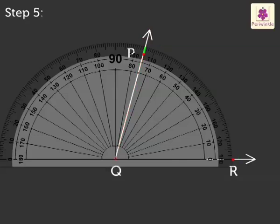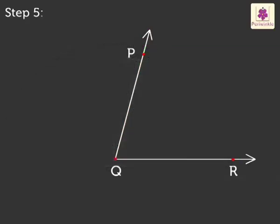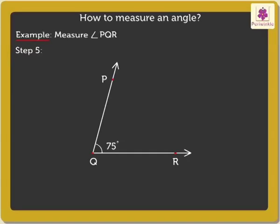Step 5. Write that measure as the measure of the angle in degrees. Thus, we get the measure of angle PQR is equal to 75 degrees.